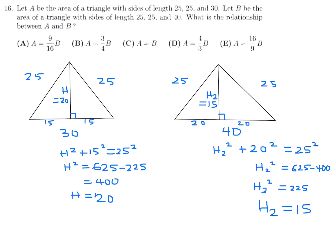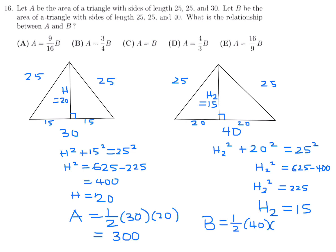Area A = ½ × 30 × 20 = 300. Area B = ½ × 40 × 15 = 300. Therefore A = B, so the valid equation is A = B. Number 16, answer C.